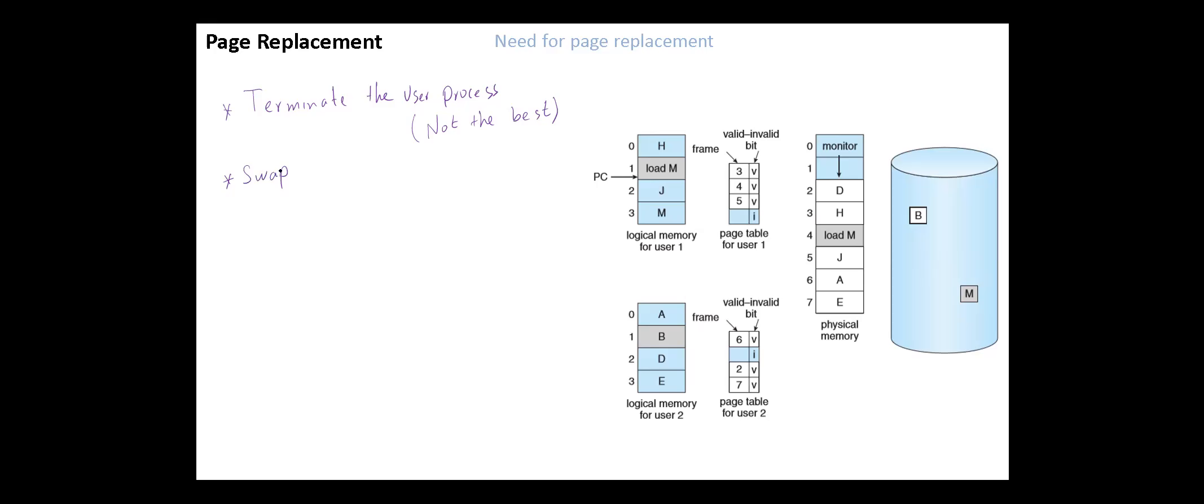The operating system could instead swap out the process, freeing all its frames and reducing the degree of multi-programming. In this case, the frames occupied by this process will be free for other processes. In some cases this solution is a good one and we will discuss it later.